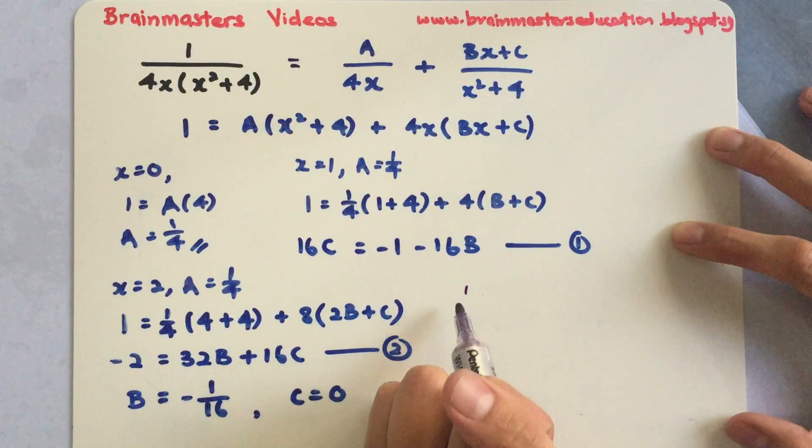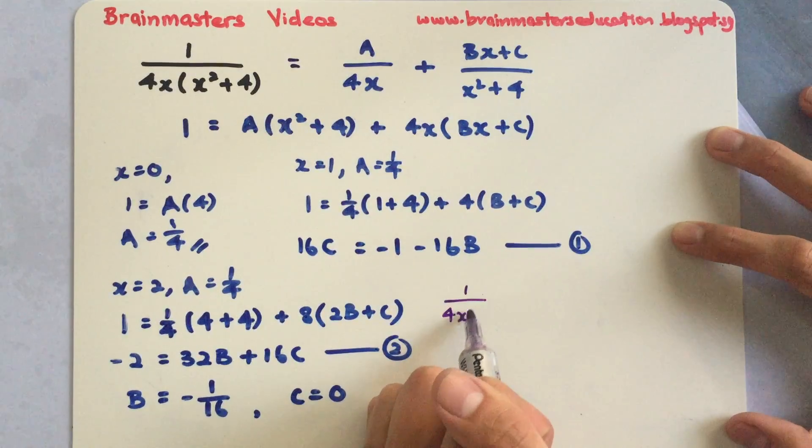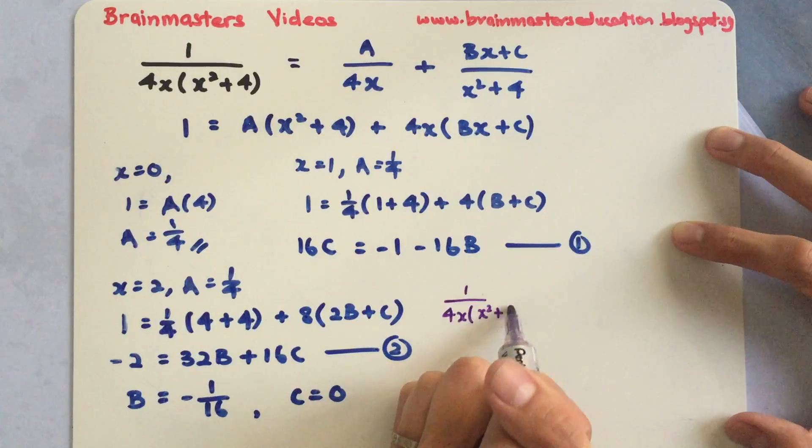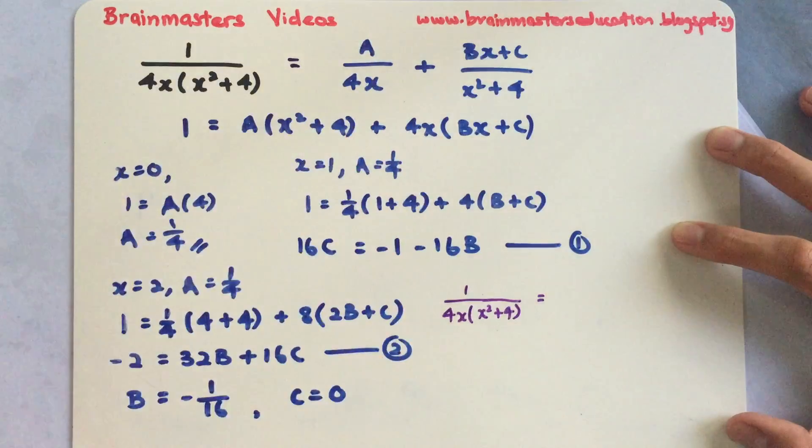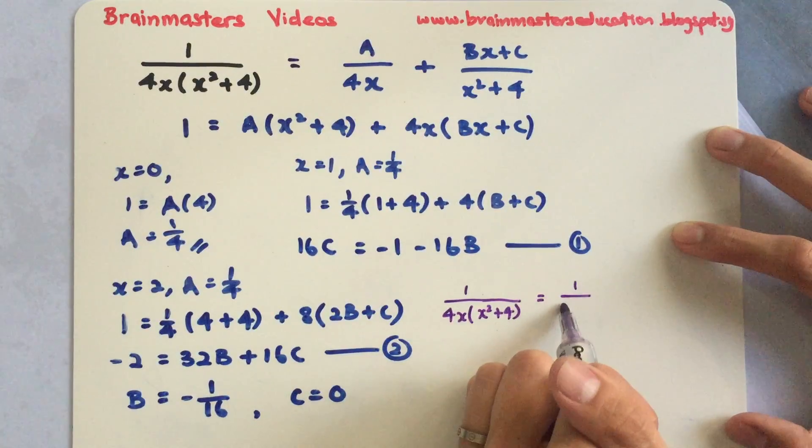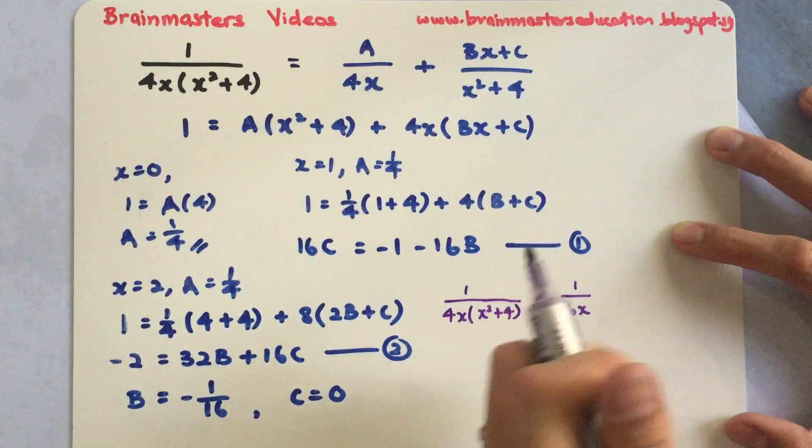You'll be able to achieve that 1 over 4x times x squared plus 4 can be written into, since your A is 1 over 4, I have 1 over 16x in this case.